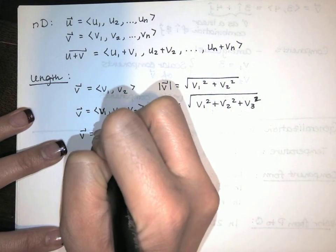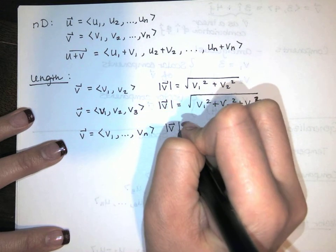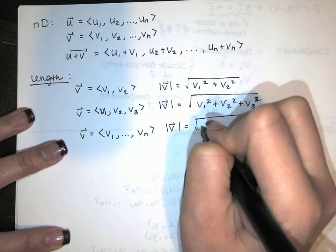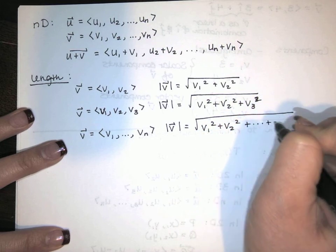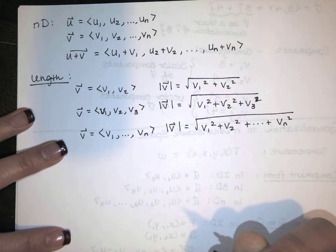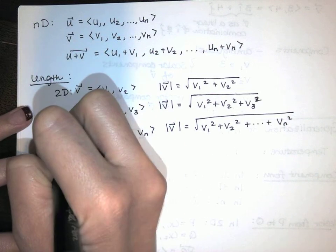And nD, do the same thing. You're just going to have n of them. Take the components, you square them, add them, and take the square root. That's it. That's 2D, that's 3D, that's nD.